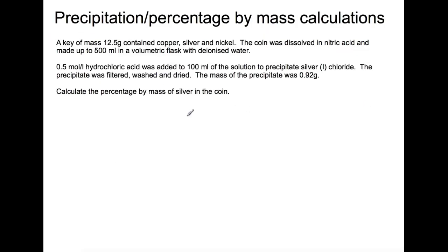The second type of calculation we're going to look at is precipitation or percentage by mass calculations. These usually come in questions relating to gravimetric analysis. This question is in two parts — I'm going to do the first part and then allow you to try the second. We have a key of mass 12.5 grams and we know it contains copper, silver, and nickel.